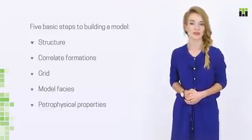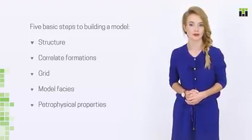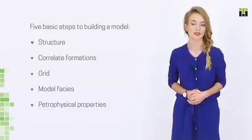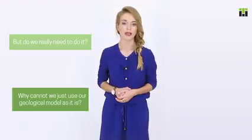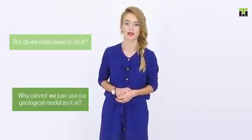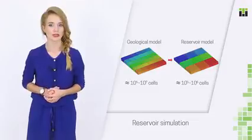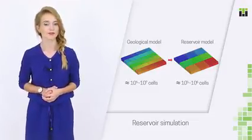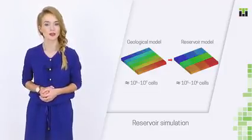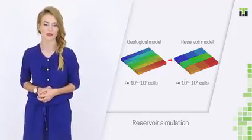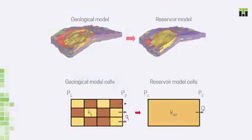After our geological model is ready, we need to convert it into a reservoir model. This is done via special procedure called upscaling. But do we really need to do it? Why cannot we just use our geological model as it is? I already told you that a typical geological model's cell size is 50 by 50 by half a meter. An average model contains millions of cells, a large one tens of millions. Modern workstations are powerful, but not powerful enough to handle a multi-million cells reservoir model, especially if you want to have the results within reasonable time.